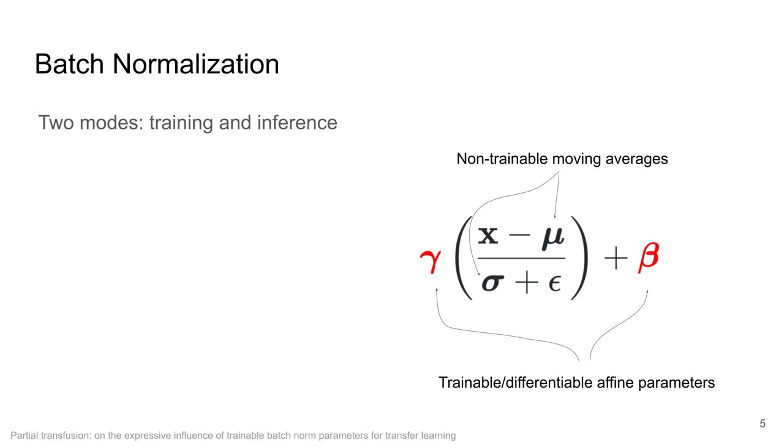During training, the batch statistics are used directly and the moving averages are updated. During inference, however, the moving averages of the mean and standard deviations are used directly.